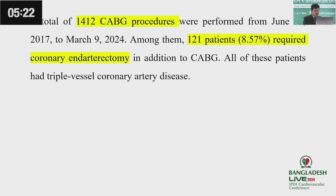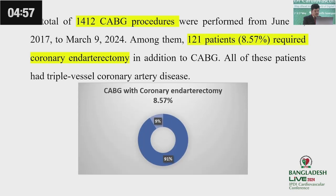A total of 1,412 coronary artery bypass graft procedures were performed from 11th June 2017 to 9th March 2024. Among them, 121 patients required coronary endarterectomy, which is around 8.57%. All of these patients had triple vessel coronary artery disease, and all procedures were performed by a single surgeon, Dr. Nikodin Mama Jangir. This pie chart displays the percentage of patients who underwent coronary endarterectomy with CABG among the total number of CABG procedures.